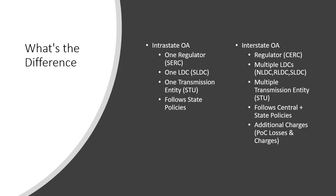Coming to interstate open access, where multiple states are involved, the regulator becomes the Central Electricity Regulatory Commission (CERC), as per the Electricity Act. Since there are multiple states involved, you might procure power from the western part of India while your plant is in the eastern part. Power would flow from the western region to the eastern region, scheduled through the Western Regional Load Dispatch Center (WRLDC) to the Eastern Regional Load Dispatch Center (ERLDC), and you also deal with the State Load Dispatch Center at the consumption end.